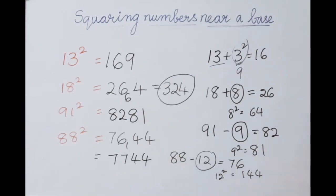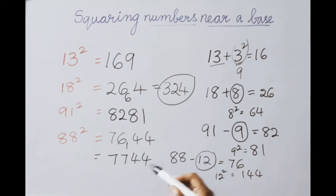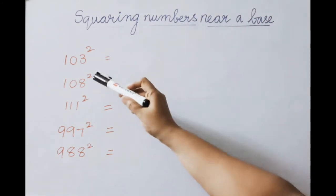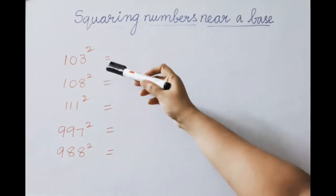The first part was 76, plus carry 1 gives 77, and the remaining digits are 44. So 88 squared equals 7744.